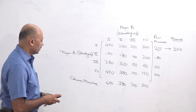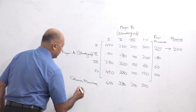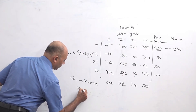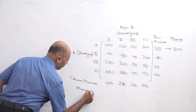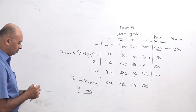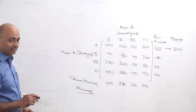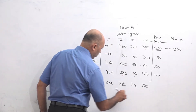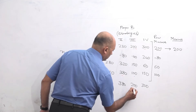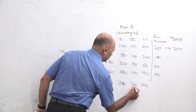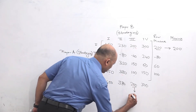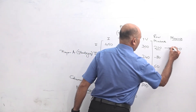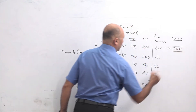So now we have calculated the column maxima. Now we will calculate Minimax. Minimax is opposite of Maximin — it means minimum out of maximum. So you compare all the values of column maxima, and you will find that the minimum value is 200. So we will write Minimax as 200.